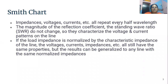The Smith chart is mainly used to find out the values of the impedances, voltages, currents, etc. All repeat every half wavelength. So we can find out the values of impedances, voltage, currents, reflection coefficients, and standing wave ratio at various wavelengths. These wavelengths are functions in terms of lambda by 2.